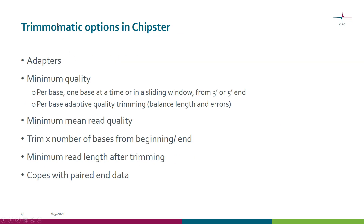Let's look at Trimmomatic in more detail. With Trimmomatic you can remove adapters and perform different types of quality trimming: trimming one base at a time by quality, or using a sliding window from either end, or a more optimized method. You can also filter based on minimum read quality, or simply trim a certain number of bases from either end. Importantly, you can request a minimum read length after trimming, so if the read becomes too short by your standards it is removed from the file. And as mentioned, Trimmomatic can cope with paired-end data.